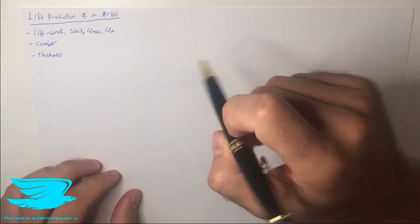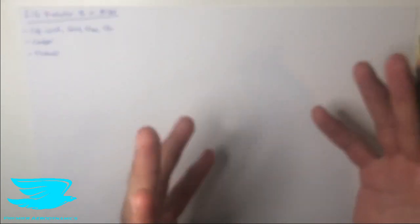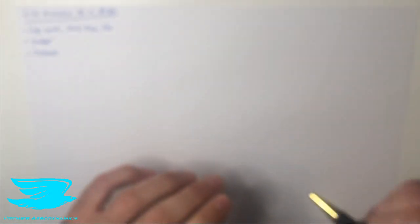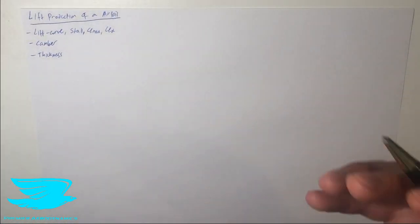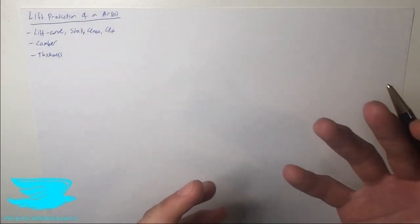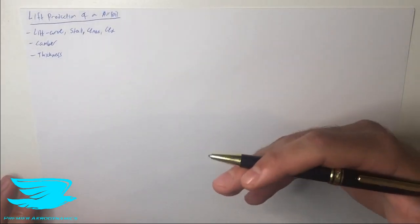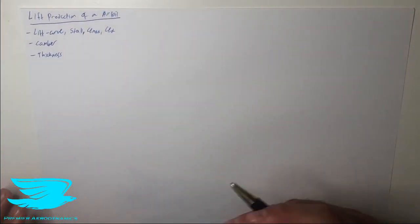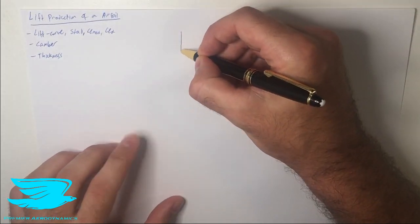What is up amigos? Today we're looking at the lift production of an airfoil. If you haven't looked at our previous video where we went through the airfoil's nomenclature, check that out in this card here. We'll be going through the lift curve, the stall, the maximum lift coefficient and the CL alpha. We'll also be going through the effects of the camber and thickness on an airfoil's lift. So let's start off here first with the lift curve.